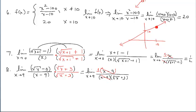Now that x minus 9 is out of the picture, we won't be dividing by zero. Let's plug in 9 again: we get 1 over, plug 9 in, square root of 9 is 3, 3 plus 3 is 6. So our answer is the same as we got from the other strategy — 1 sixth. So you have a choice on these problems.